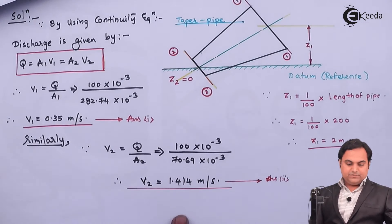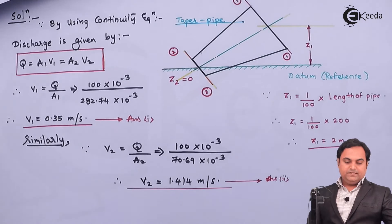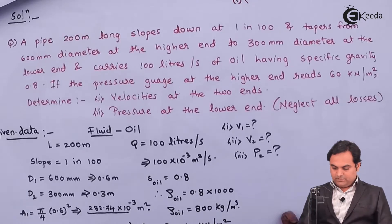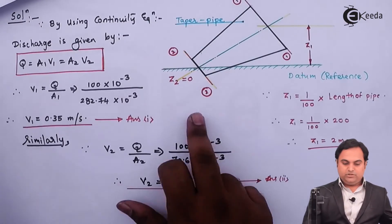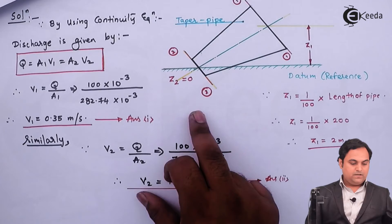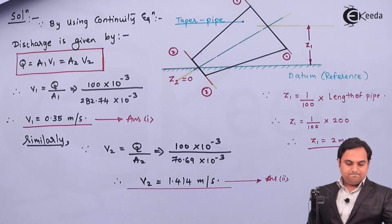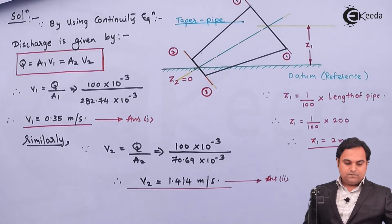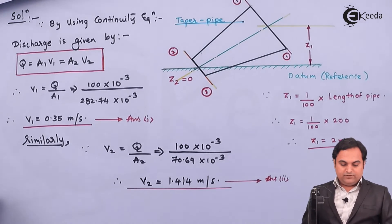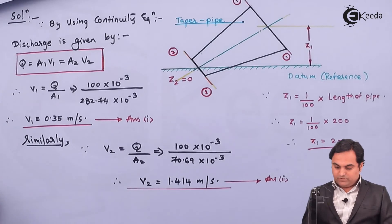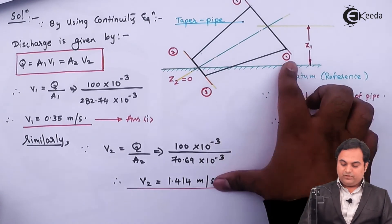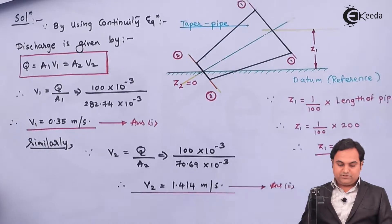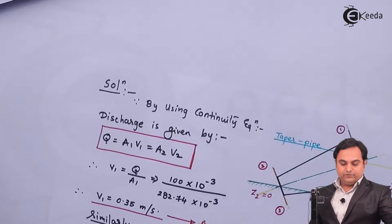Now that the velocities are known, the next step is to find the pressure at section 2, the smaller section. The value of p1 is given. I will apply Bernoulli's equation at sections 1 and 2 to find the pressure p2.